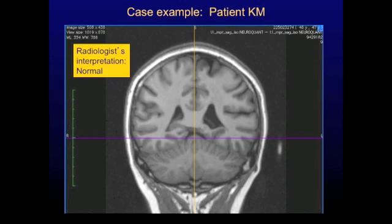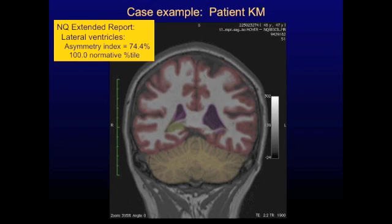This is her brain MRI after the accident — a coronal section approximately through this part of the brain and head. The radiologists interpreted this MRI as normal. We did a NeuroQuant Extended Analysis on her MRI data, and you can see the segmented DICOM, which is the colored brain image that NeuroQuant produces. It's easier to see on this image that there's some asymmetry in the brain. Probably anybody can see that the left lateral ventricle, which is on the right side of your image, was bigger than her right lateral ventricle.